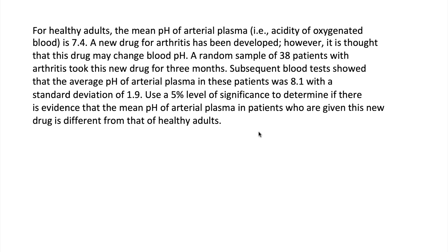A random sample of 38 patients with arthritis took this new drug for three months. Subsequent blood tests showed that the average pH of arterial plasma in these patients was 8.1 with a standard deviation of 1.9. Use a 5% level of significance to determine if there is evidence that the mean pH of arterial plasma in patients who are given this new drug is different from that of healthy adults.